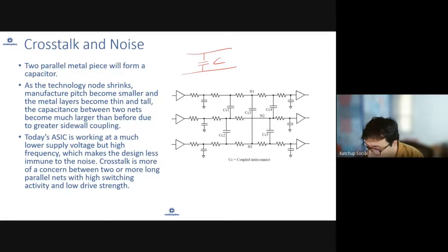As the technology nodes are shrinking, you're basically manufacturing with metal layers becoming thin and tall. This capacitance between two nets is becoming much larger than before. Also, today's ASICs and devices are working at lower supply voltages. So crosstalk, because of these two reasons, has become more and more important. There's more coupling capacitance, the voltages are low, so it impacts more and more in the designs, and it has become an important part of doing sign-off STA analysis.